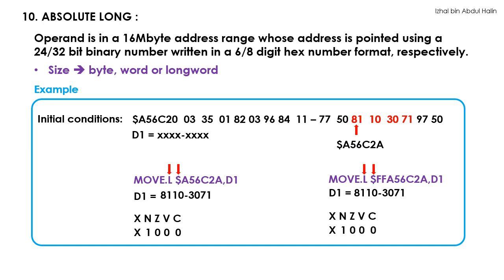As a summary for this addressing mode, you can specify either a six-digit or eight-digit hex number as the operand's address. However, the 68K microprocessor will just consider the first six digits as the address. Note that only even addresses can be used with this instruction. We are left with only two more addressing modes and we are done — just two more slides.